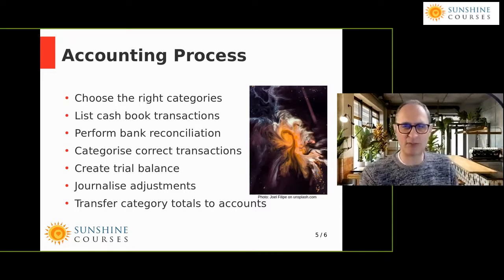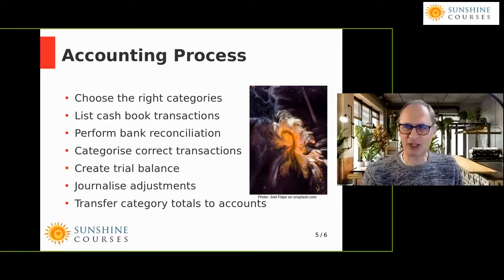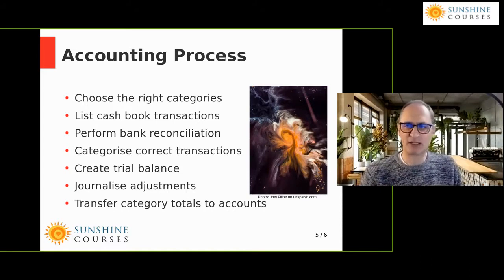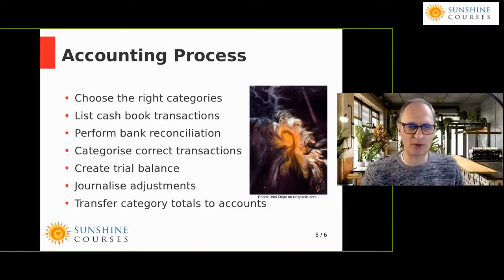We then list the transactions during the month or year, putting them into a book called the cash book — even though most transactions are no longer cash, we still call it that. Then we perform a bank reconciliation, probably the most significant of all accounting controls, to identify errors. We categorize the transactions once we know we have the right numbers, then summarize them into the trial balance. We examine the trial balance for anything obviously wrong, journalize any corrections using debits and credits, and finally transfer the category totals to the accounts.